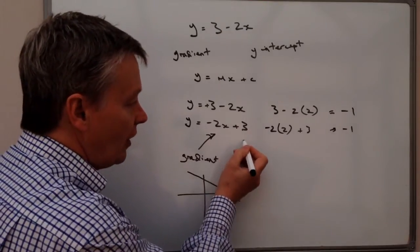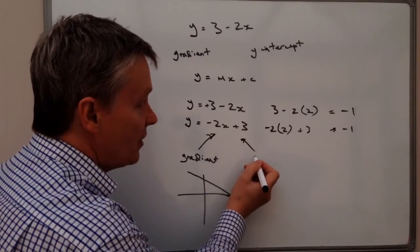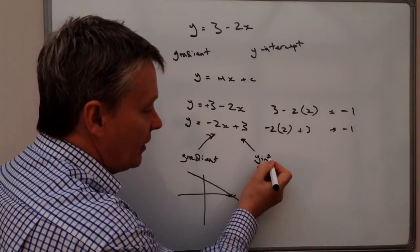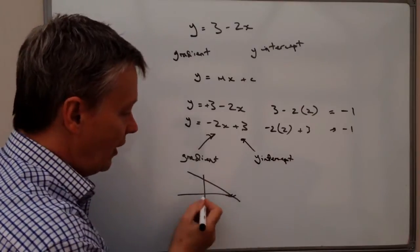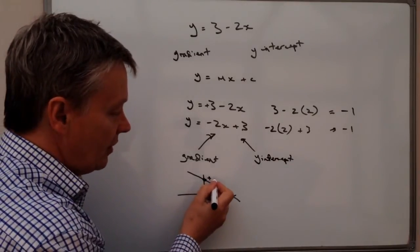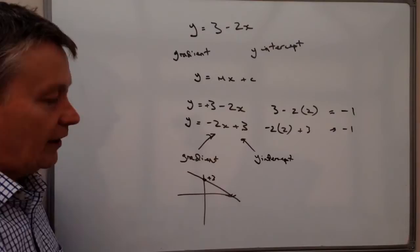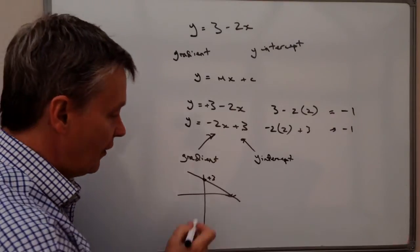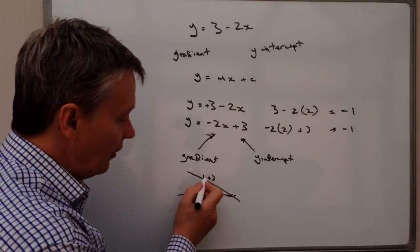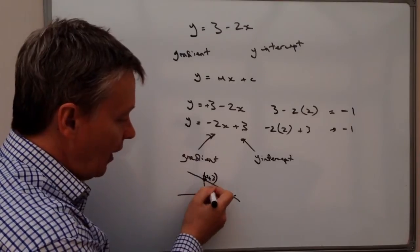And it's going to cross the y-intercept, which is this bit here, the y-intercept. And that's going to cross the y-intercept at plus three, or the value of y being three. So this point here will be zero three.